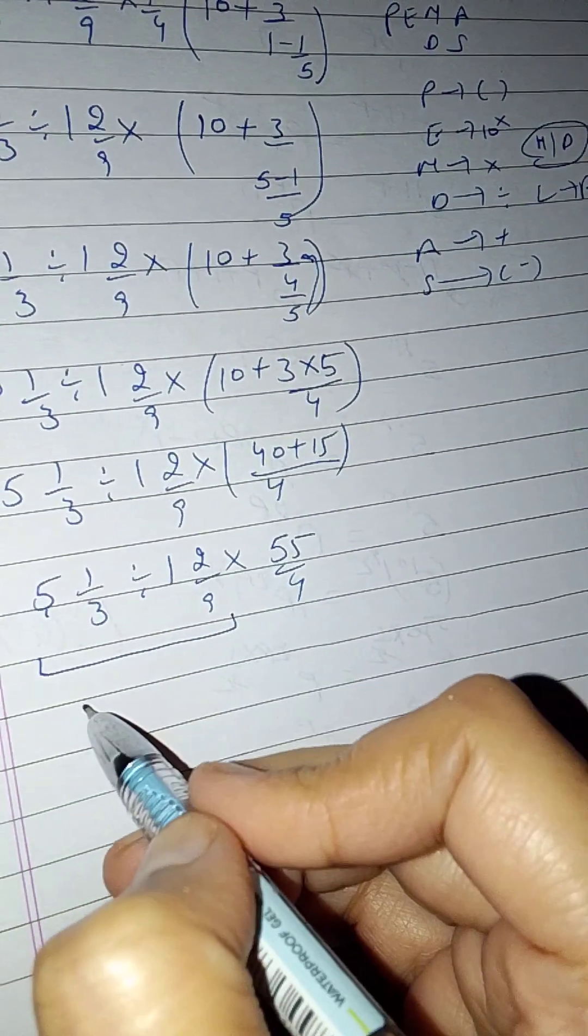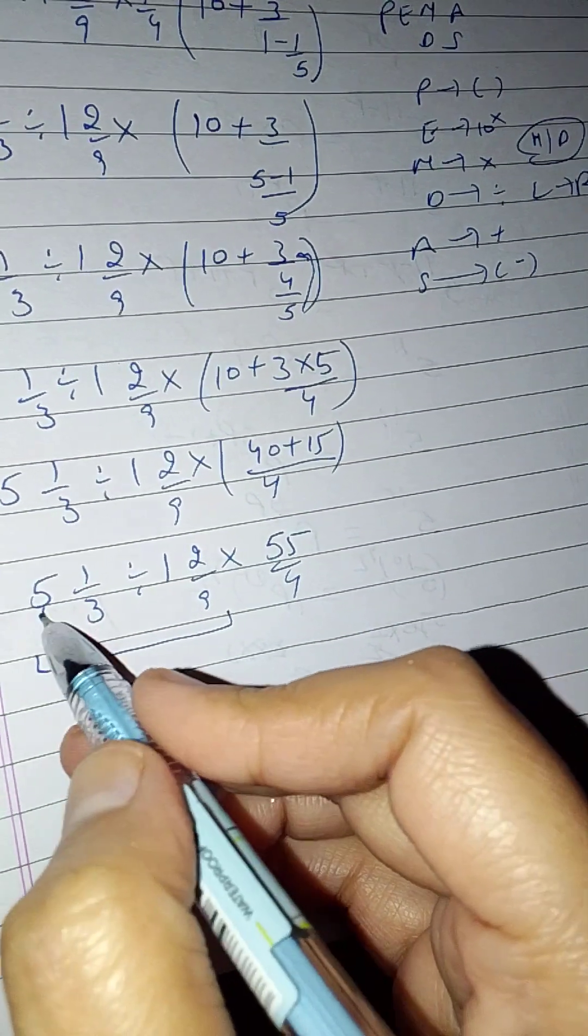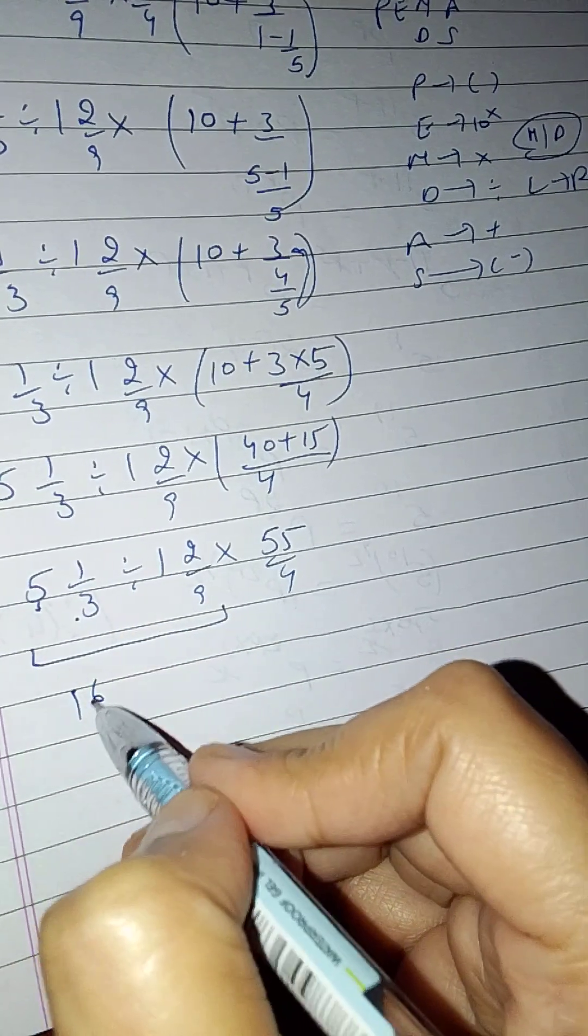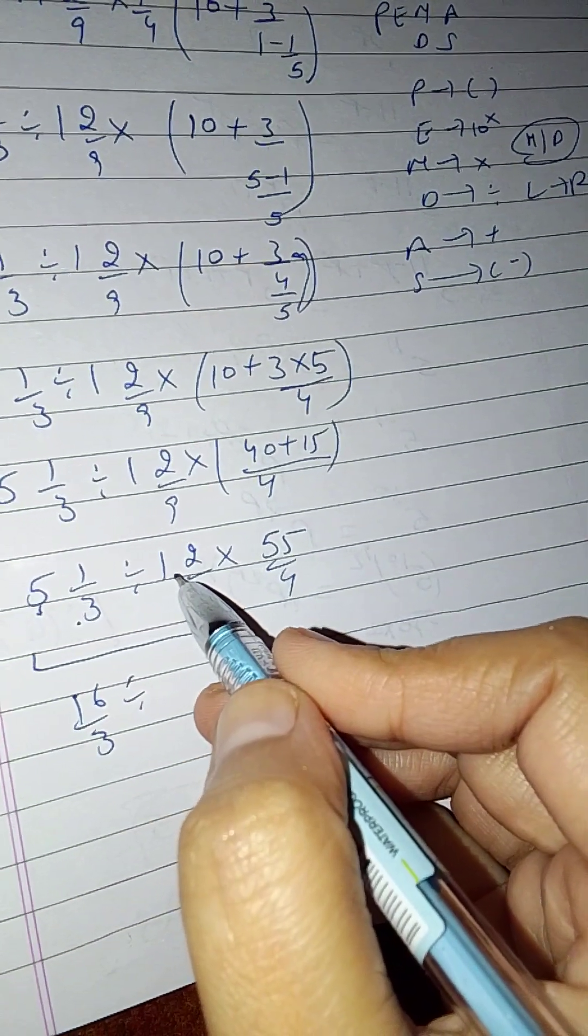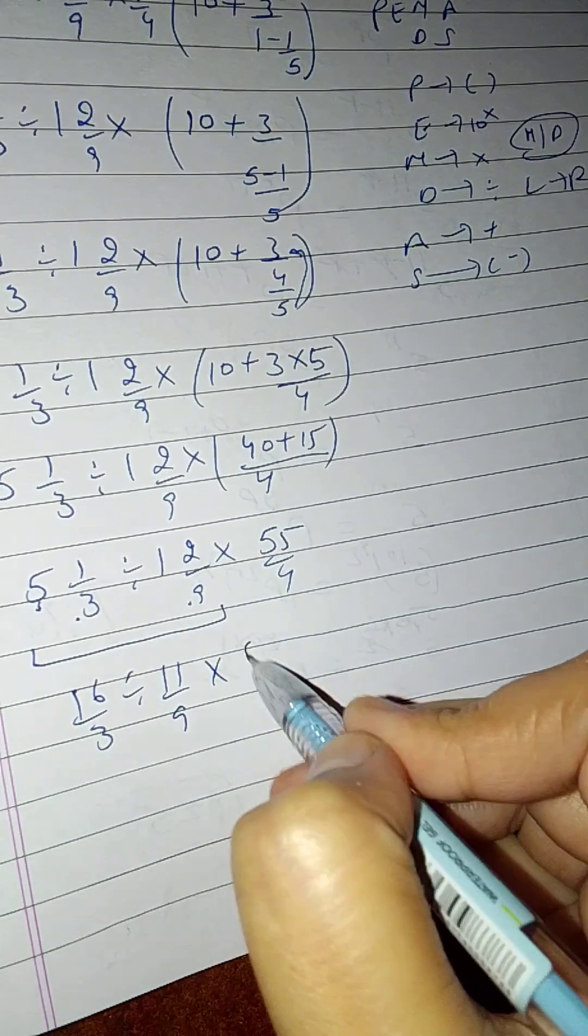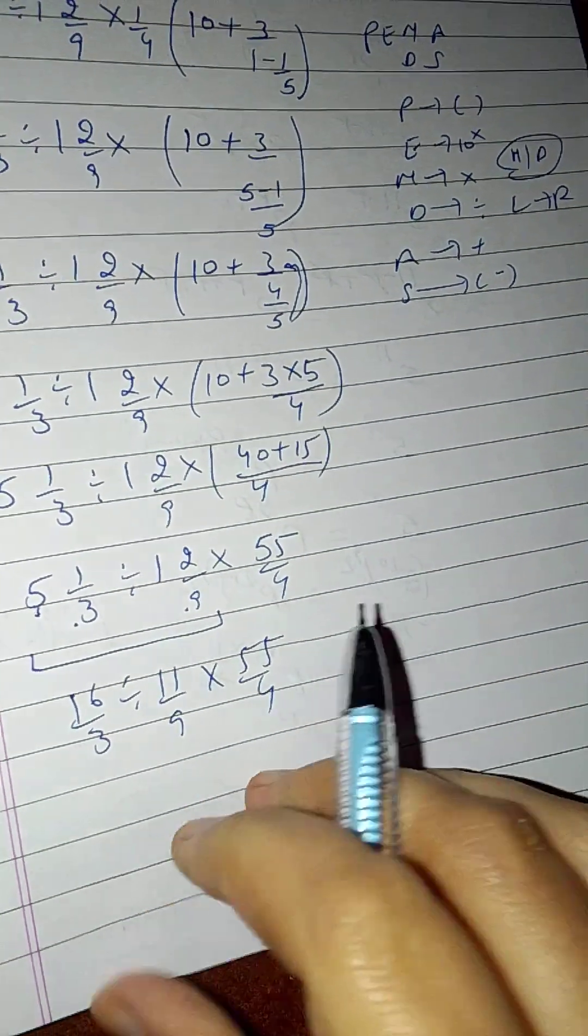This becomes 5 times 3 is 15 plus 1, 16 by 3, divide 9, 2, 1, 9 plus 2, 11 by 9 into 55 by 4.